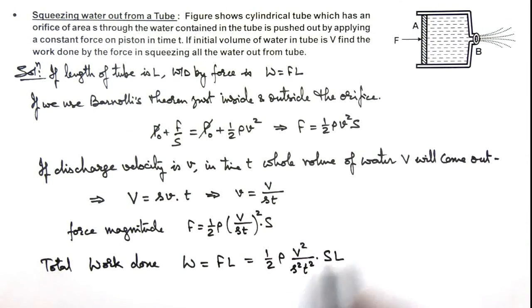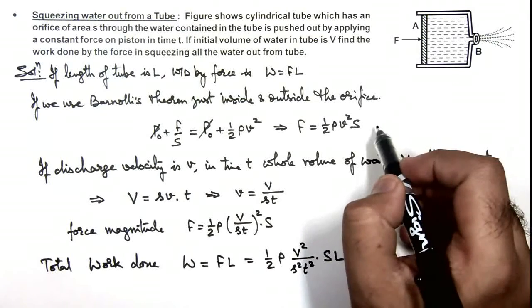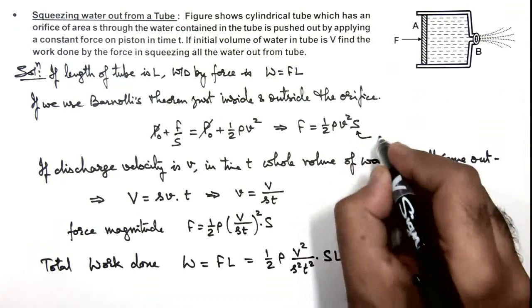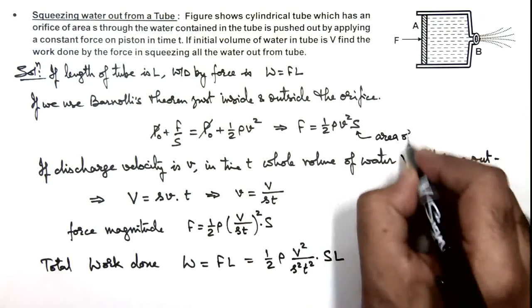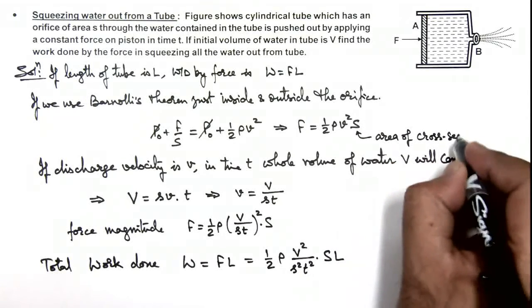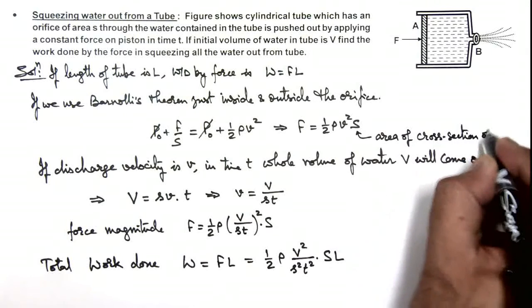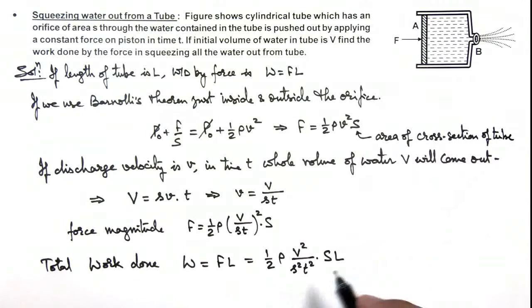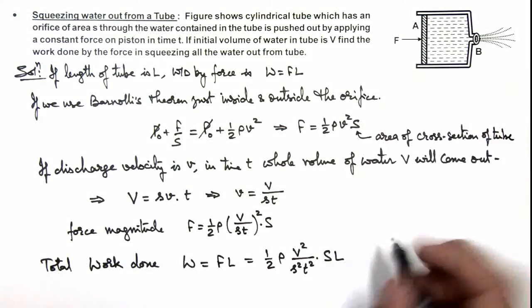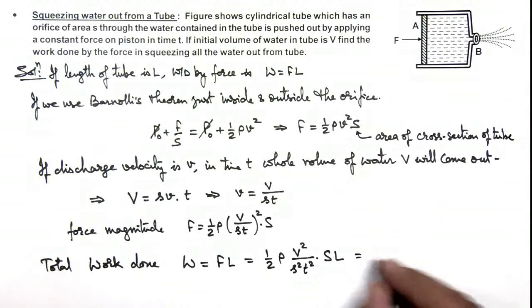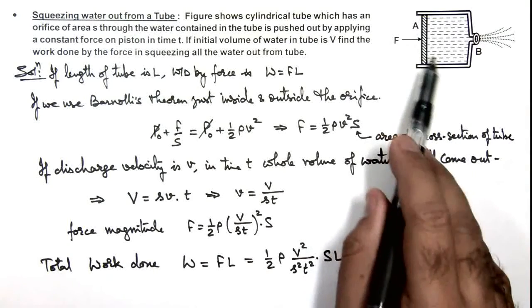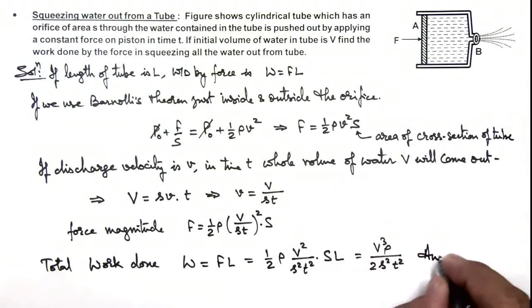Here capital S is the area of cross section of the tube. This S multiplied by L can be written as the total volume of the tube, so this can be written as V³ρ divided by twice of s²t², that is the total work done in squeezing the whole water out of the tube, which is the result of this problem.